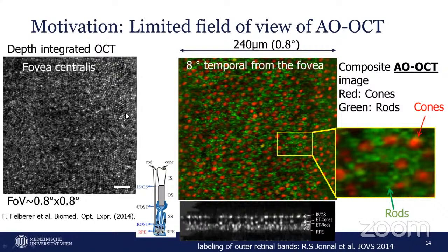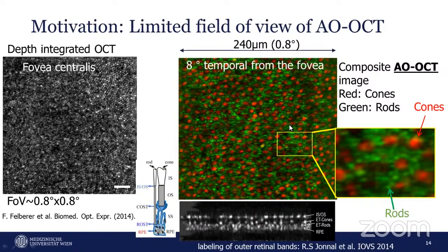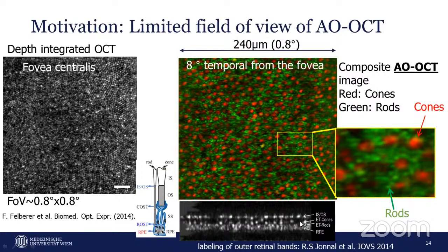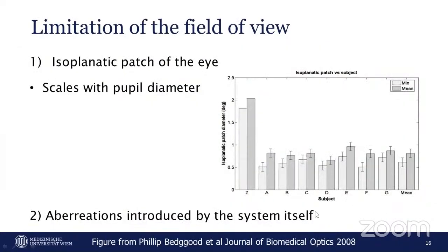The topic of this presentation is extended field of view self-referenced imaging using an adaptive optics OCT system. This shows a cone photoreceptor image of the human retina at the fovea centralis, where each bright spot is a photoreceptor. At eight degrees temporal from the fovea, red dots represent cones surrounded by green small dots which are rods. The current field of view is only 0.8 by 0.8 degrees.